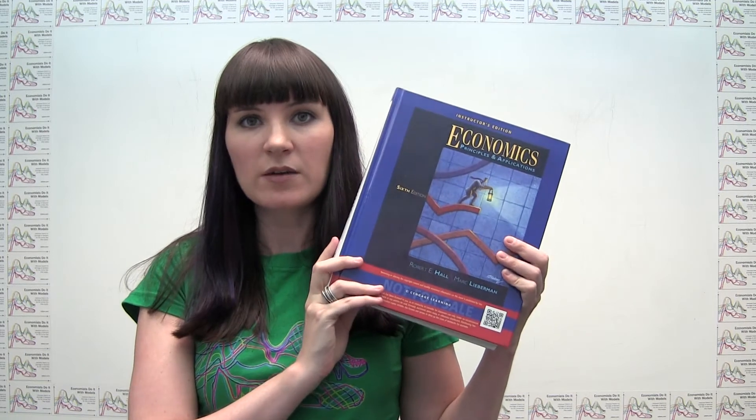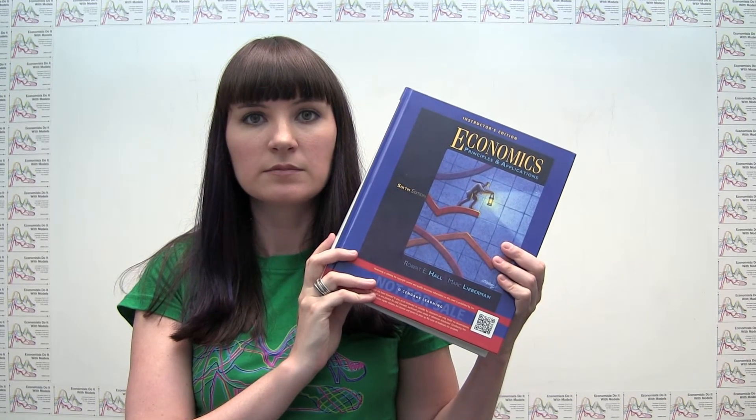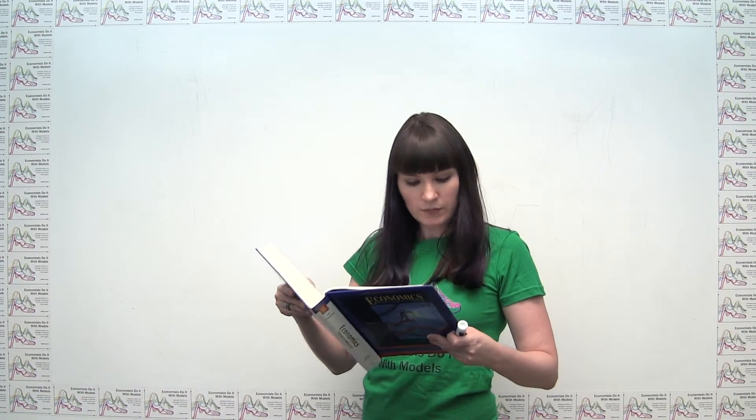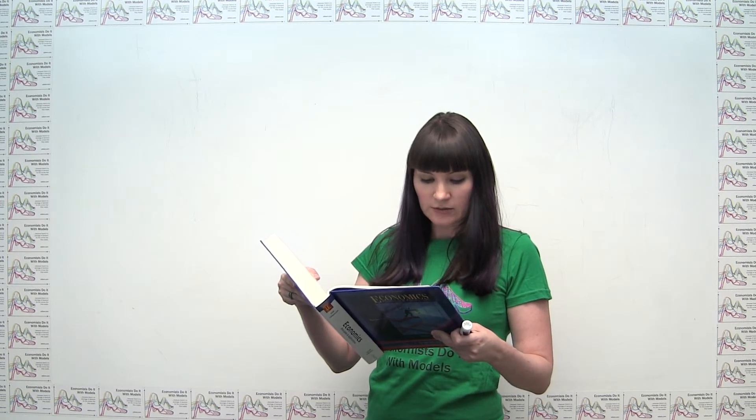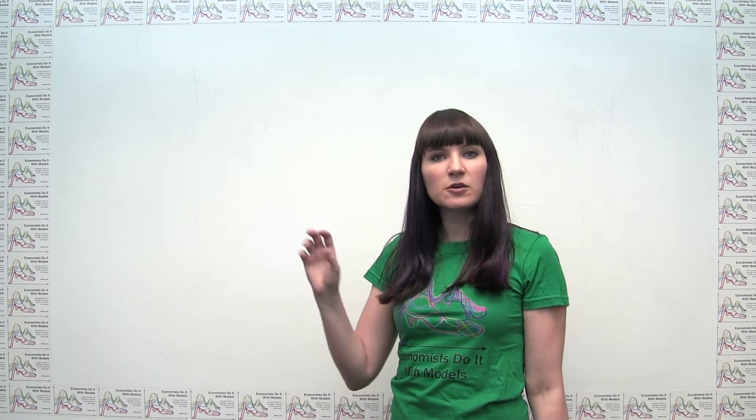Hey everybody! Today's practice problem comes from Economics, Principles, and Applications by Robert Hall and Mark Lieberman. We're working with the 6th edition, chapter 2, problem number 9. The problem says: indicate which curve shifted and in which direction for each of the following. Assume that only one curve shifts. This is interesting because we can work backwards — we can infer from observing prices and quantity changes in the market which curve must have shifted and in which direction.